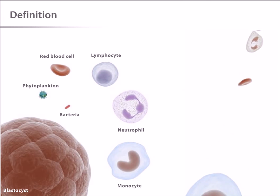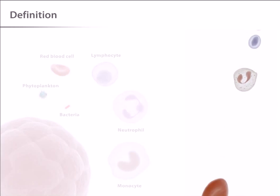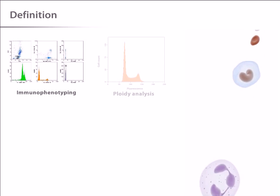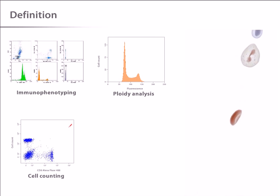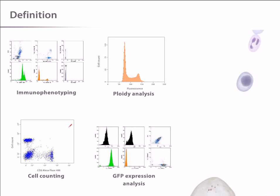Flow cytometry is a powerful technique for the analysis of multiple parameters of individual cells within heterogeneous populations. Flow cytometers are used in a range of applications, from immunophenotyping to ploidy analysis to cell counting and GFP expression analysis.